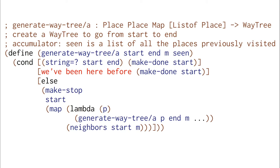How can we describe when we've been here before? We have a list of places and a place — we just want to check if the place we're in is in the list of places we've been before. We'll use member? to check that.